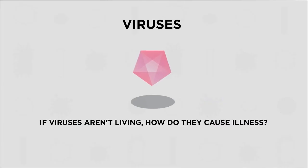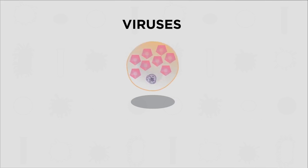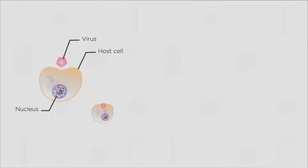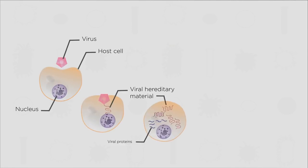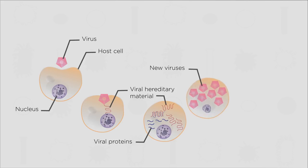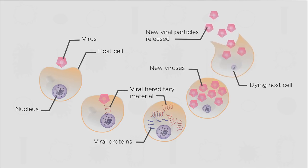So if viruses aren't living, how do they cause illness? Viruses are parasites. They can only reproduce in other living cells. They enter a host cell and hijack the host's genetic machinery. They make copies of their own viral genetic material instead and produce lots more virus particles. After lots of virus particles have been made, the host cell dies and the viral particles are released to infect more cells.